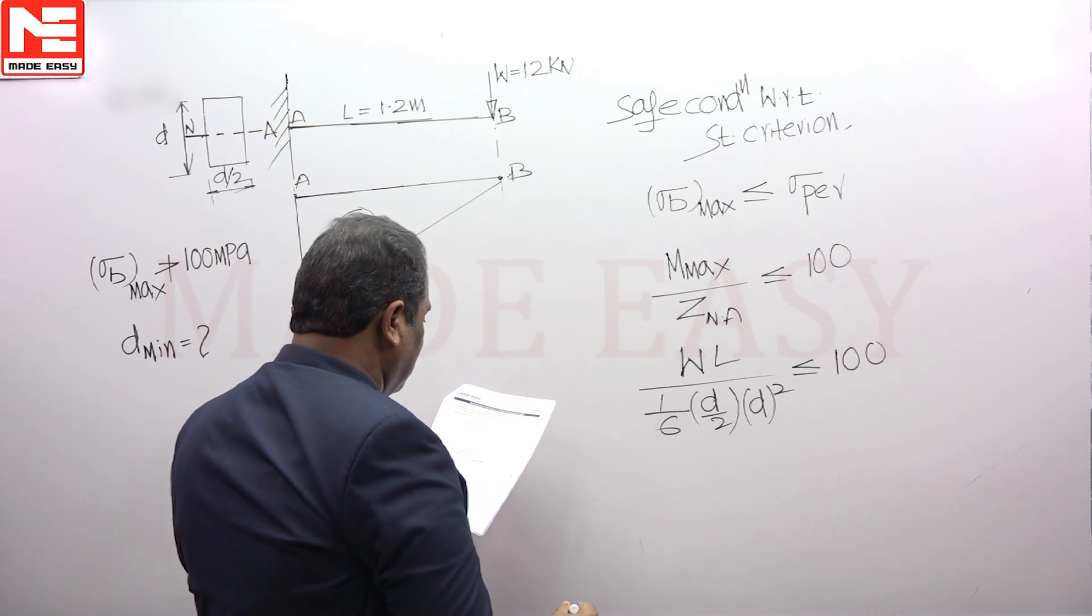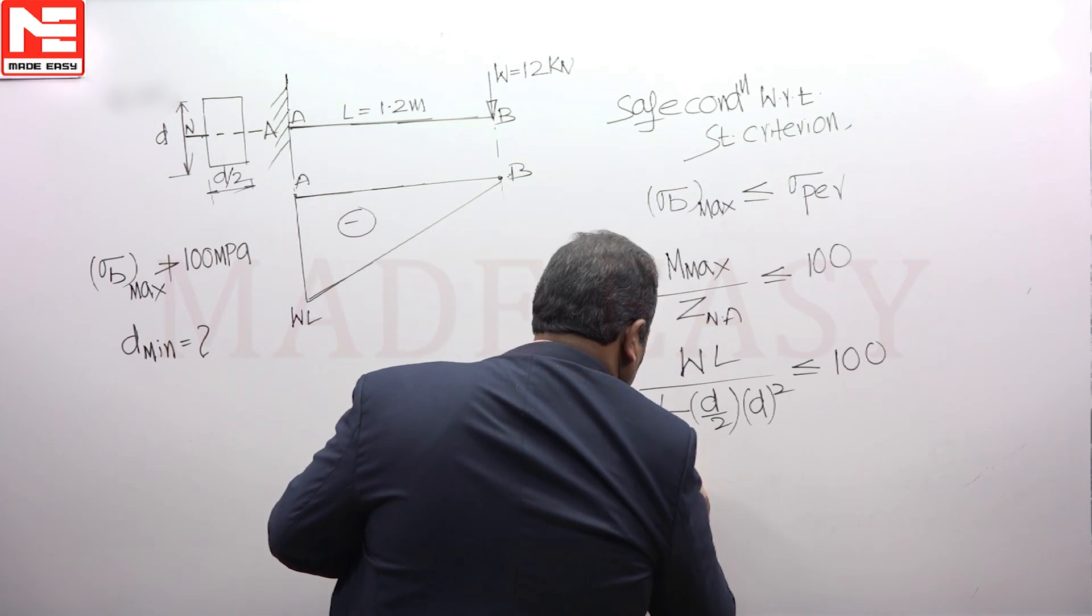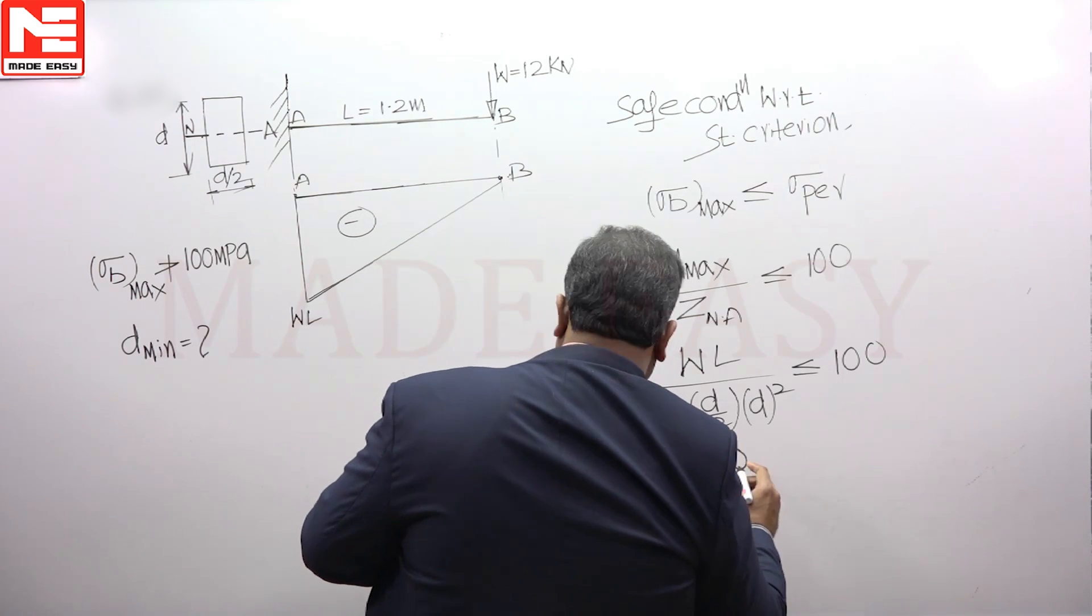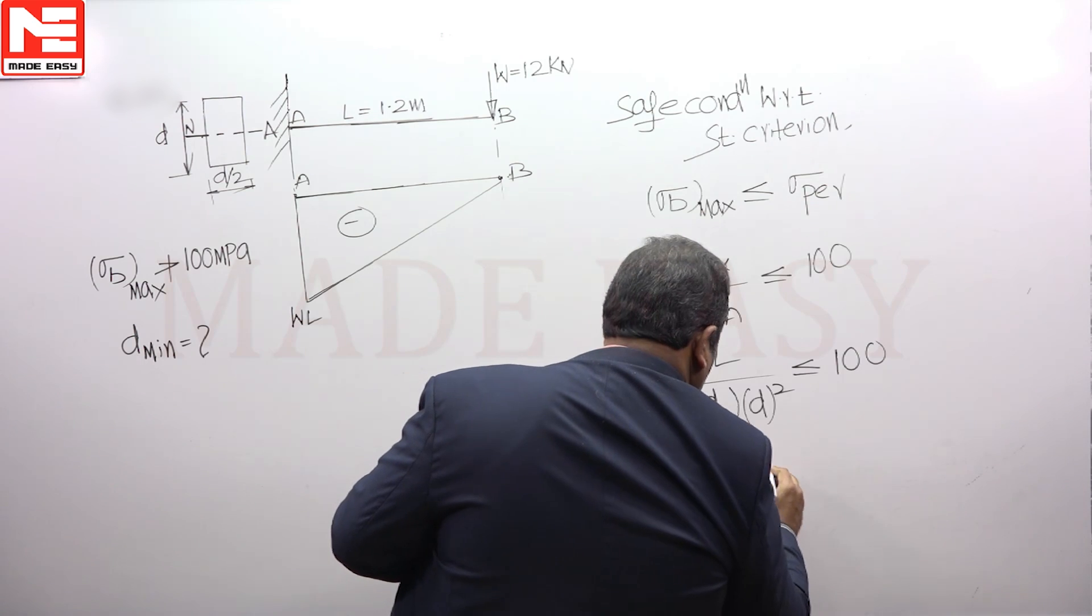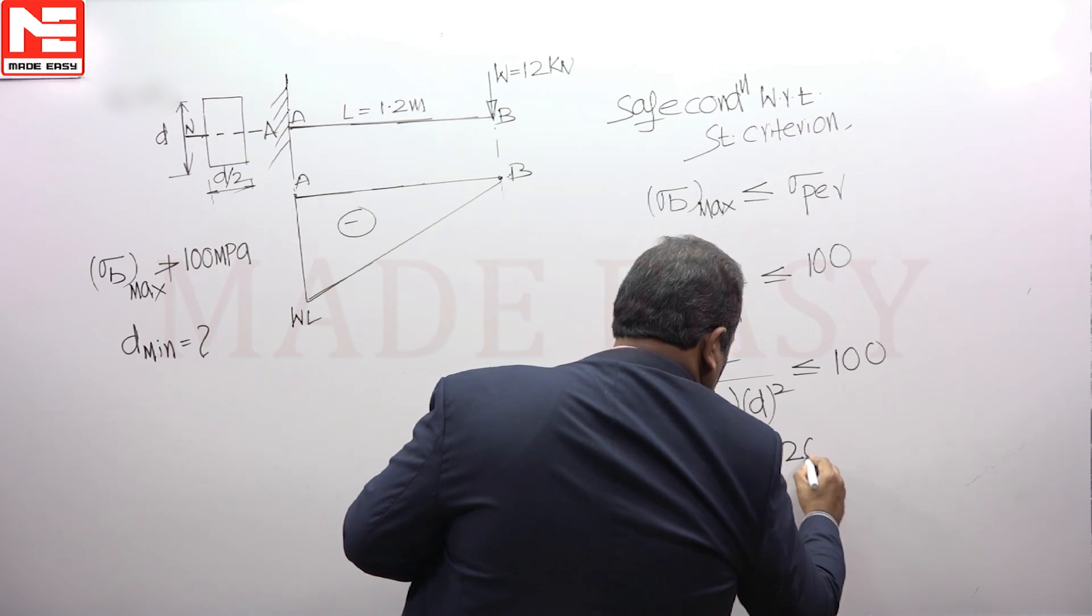Now by substituting the given data, W is given as 12,000 newtons, and length is given as 1200 mm.